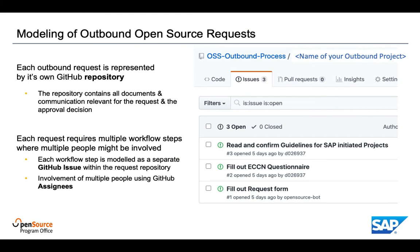In our enterprise GitHub, we have a special outbound process organization where we model each and every outbound request as a separate GitHub repository, which gets the name of the outbound project. Each repository can then contain all the documents and communication relevant for the respective request and the final approval decision. As each outbound request requires multiple workflow steps where multiple people have to be able to work on it at the same time, we use GitHub issues within the different request repositories to model the workflow steps. The colleagues required to work on individual workflow steps are modeled as assignees to the according issues inside the GitHub request repository.